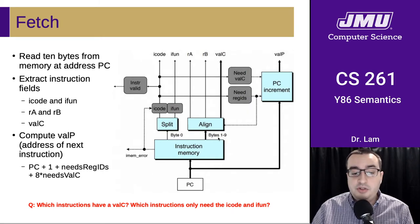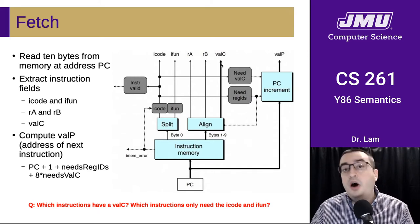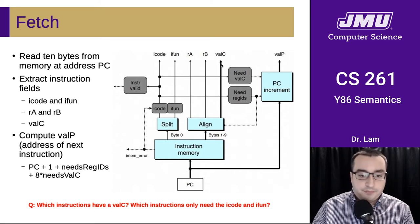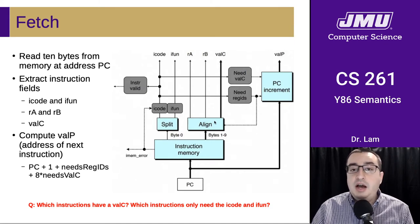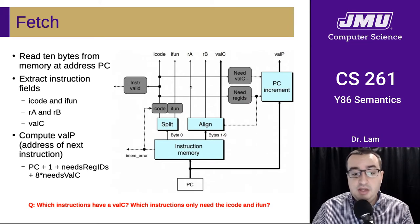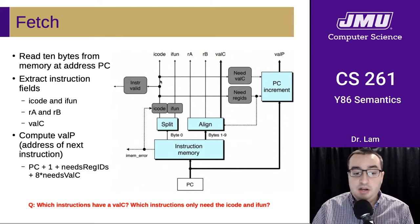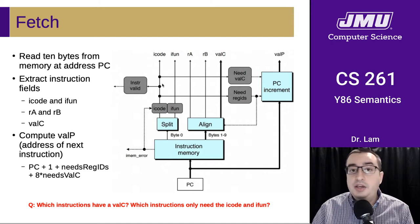We're going to extract bytes one through nine, and that's going to turn into RA, RB, and/or ValC, depending on what kind of instruction we have. So we'll have all five of these pieces of information coming out of these bytes. Then we do a little bit of logic to determine whether we actually need that ValC and whether we actually need the register IDs — all based on the iCode.